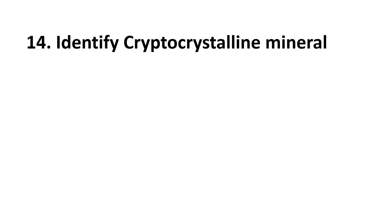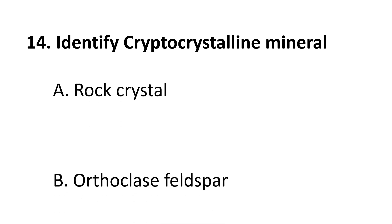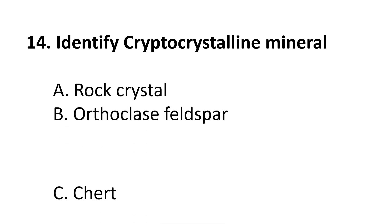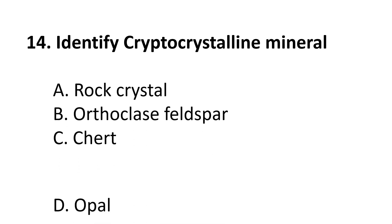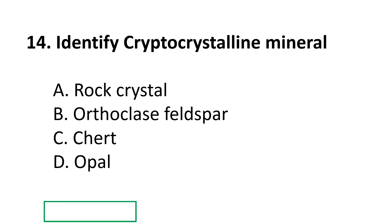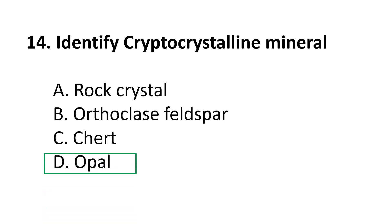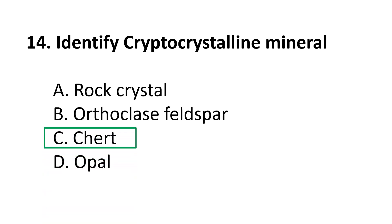Question 14: Identify a cryptocrystalline mineral — A. rock crystal, B. orthoclase feldspar, C. chert, D. opal. The correct answer is C, chert. Chert is a cryptocrystalline variety of SiO₂.